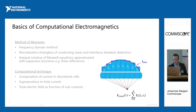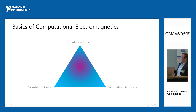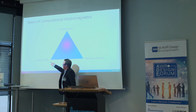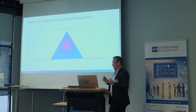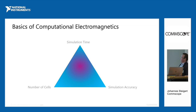On this slide you can see the trade-off triangle. For engineers it's daily business to handle trade-offs. On the left side of the triangle is the number of cells, which is directly related to the simulation domain size and the discretization cell size. On the other side is the simulation accuracy, and at the top is the simulation time. Our job as engineers is to find a suitable trade-off between all three.